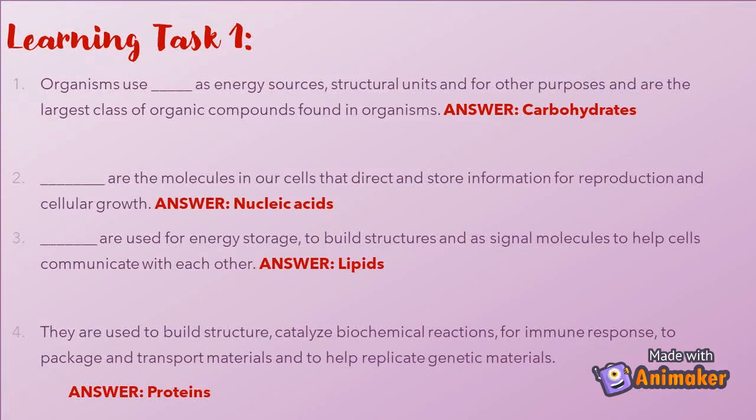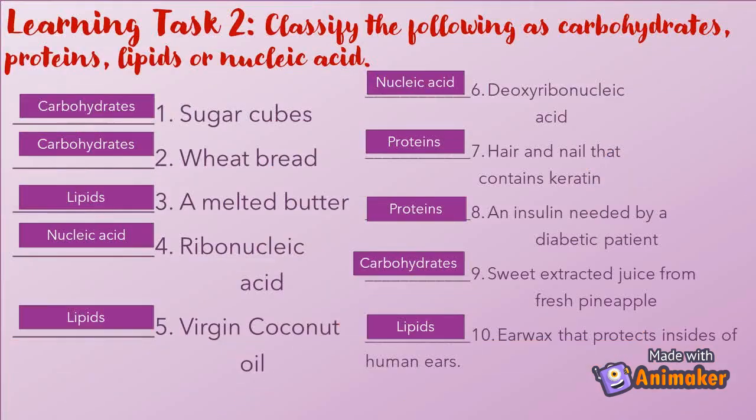Learning Task One: Choose the letter of the correct answer. Organisms use blank as energy sources, structural units, and for other purposes, and they are the largest class of organic compounds — answer: carbohydrates. Blank are the molecules in our cells that direct and store information — answer: nucleic acids. Blank are used for energy storage and as signal molecules — answer: lipids. They are used to build structure, catalyze biochemical reactions, and help replicate genetic materials — answer: proteins.